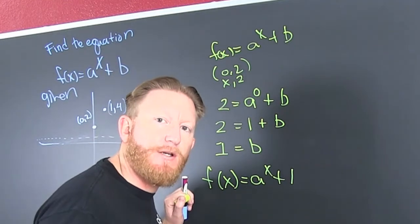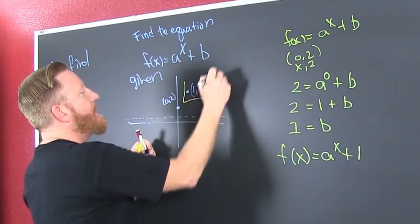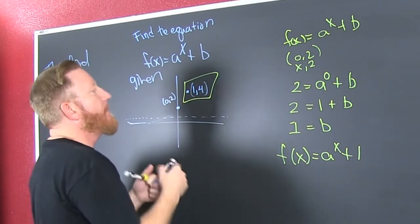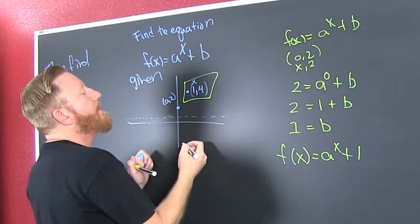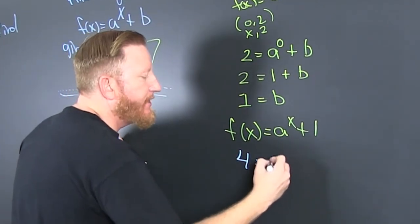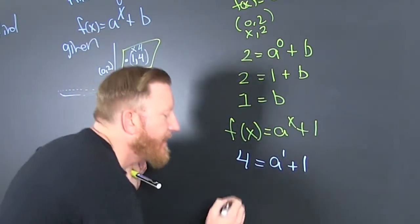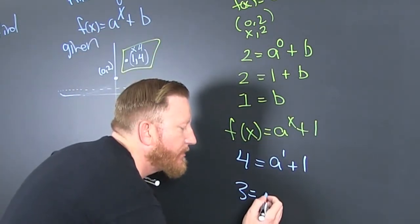Now, we're going to use that second point so that we can go find our a. Okay, so what a? I have this a. So then a. Okay, I see. My x is 1. My y is 4. Sure. So now my y is 4. That's a to the 1 plus 1. So what does that say? That says that a is equal to 3.